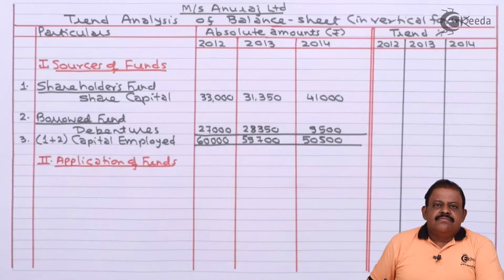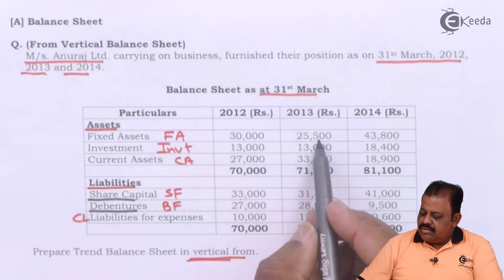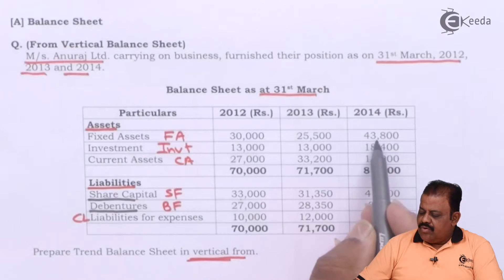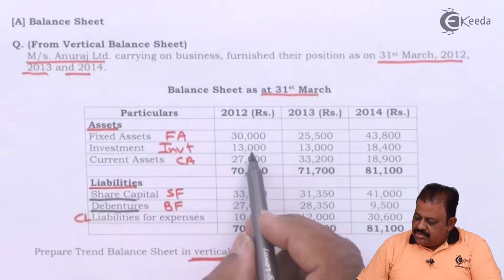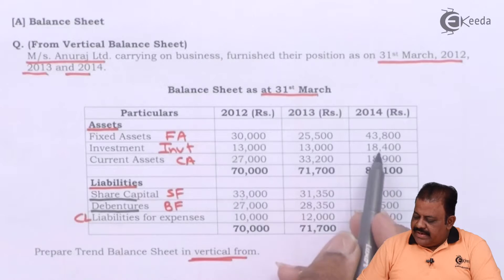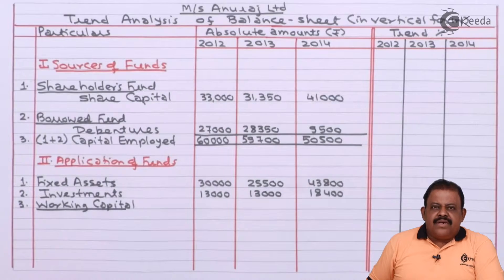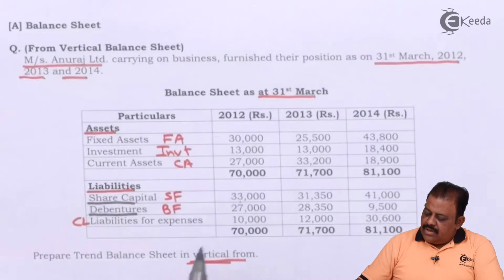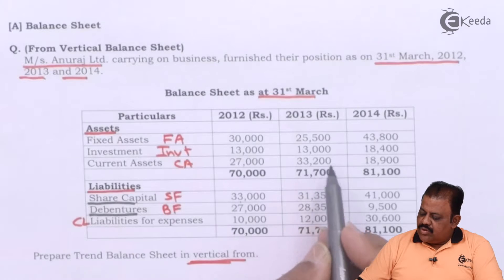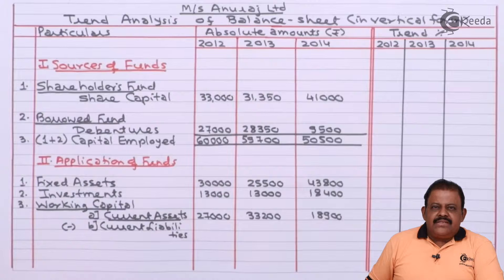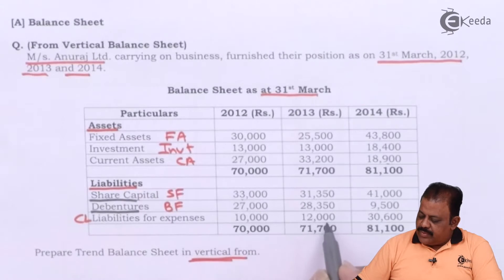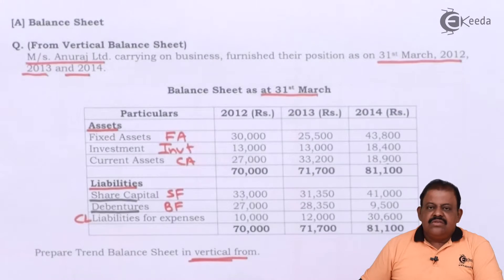In the second part — application of funds — fixed assets are 30,000, 25,500, and 43,800. Investments are 13,000, 13,000, and 18,400. Current assets are 27,000, 33,200, and 18,900. Current liabilities — liabilities for expenses — are 10,000, 12,000, and 30,600.